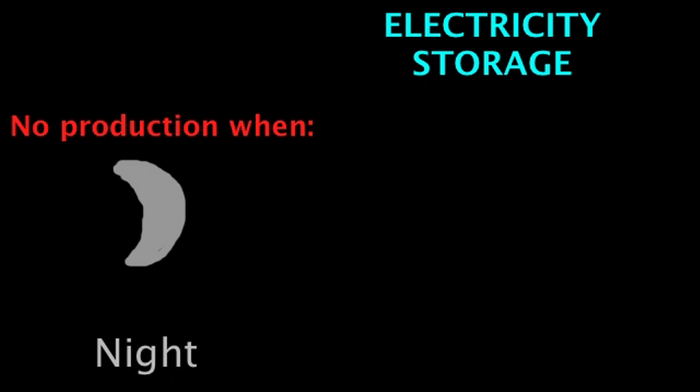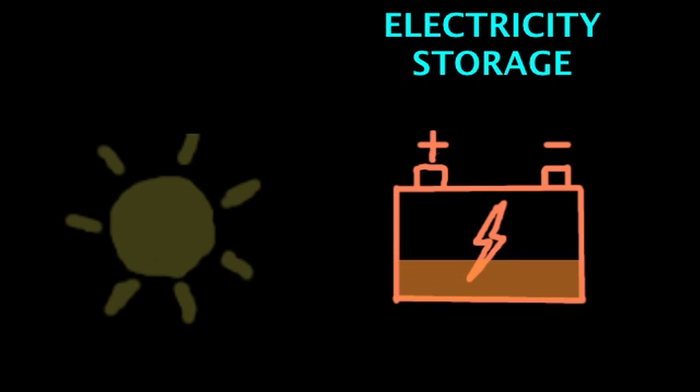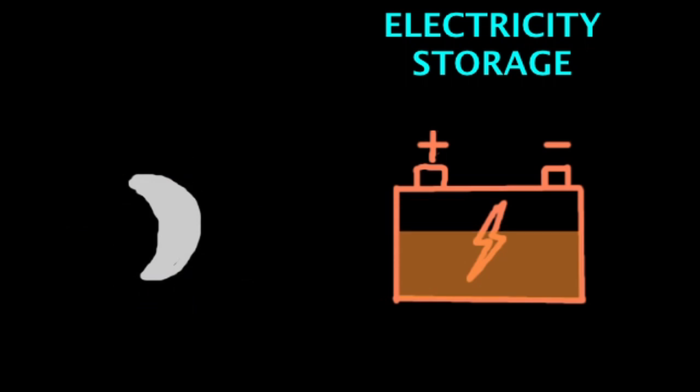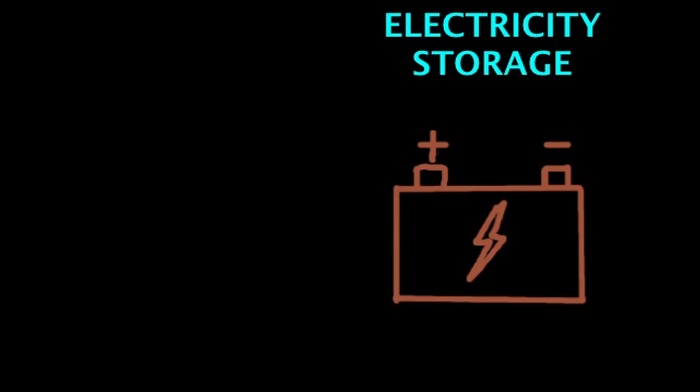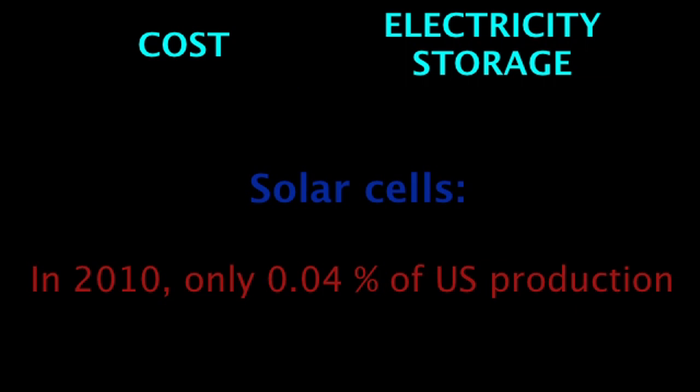Also, the electricity provided by solar cells is not available all the time. We could theoretically store the surplus of electricity during the day and use it at night, but storing these huge amounts of electricity is still complicated and expensive. These two reasons mainly explain why today only 0.04% of US electricity comes from solar cells.